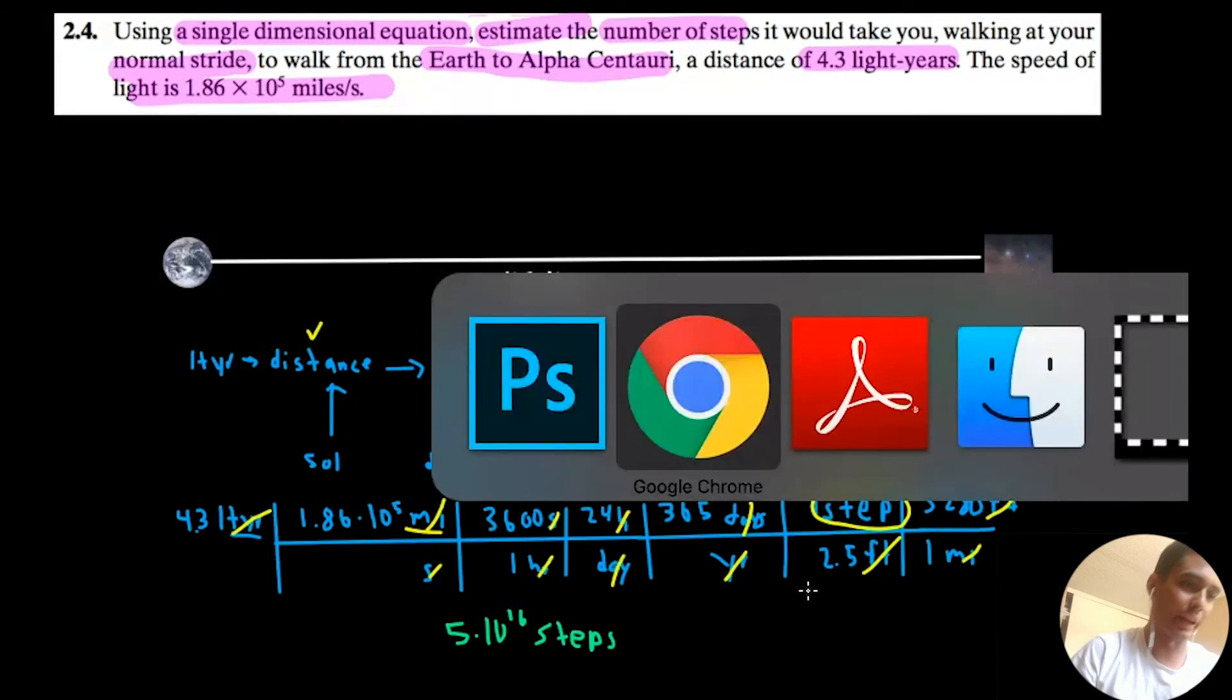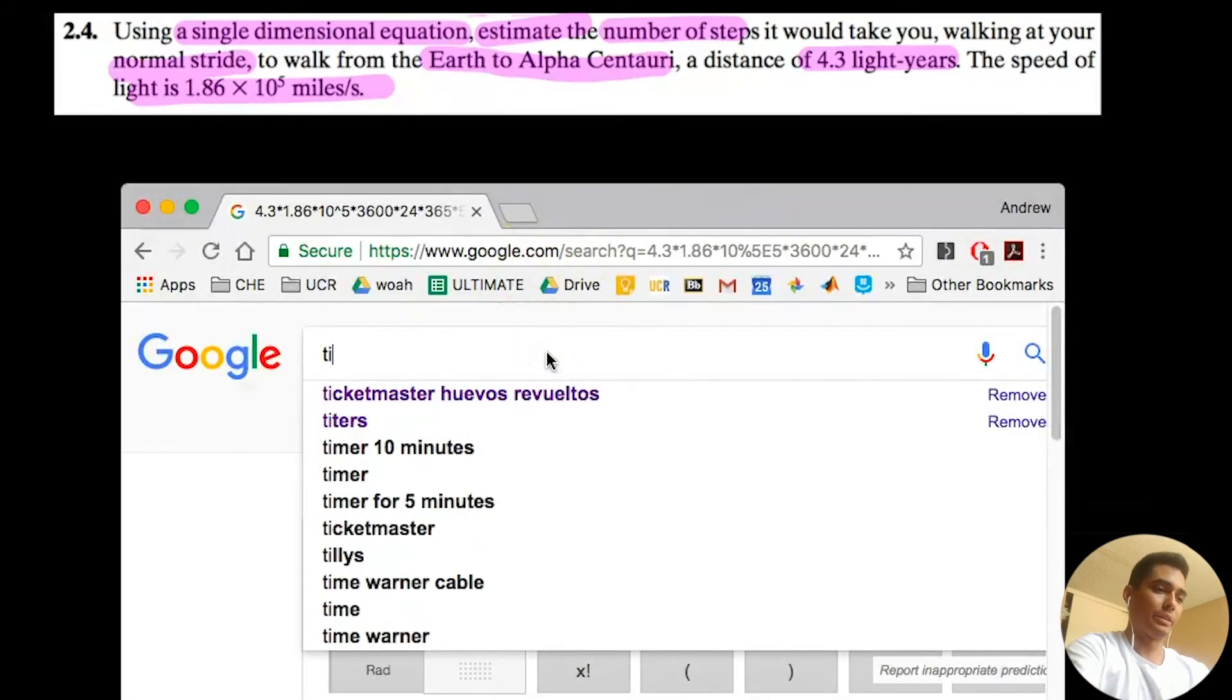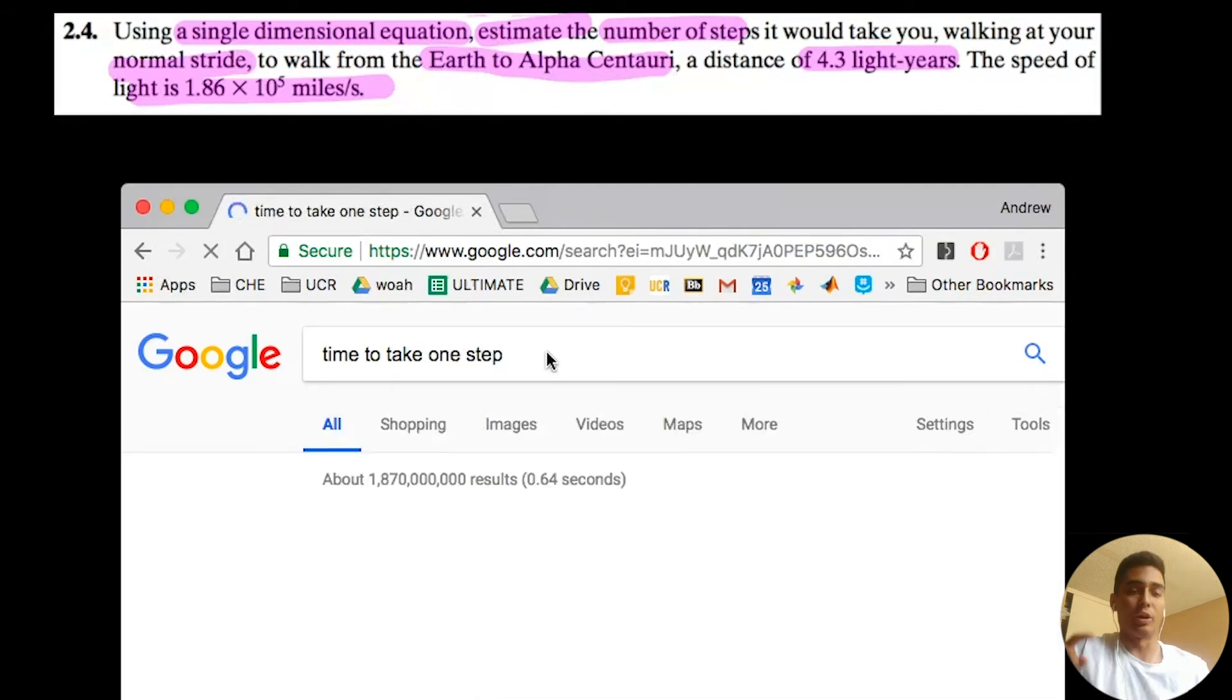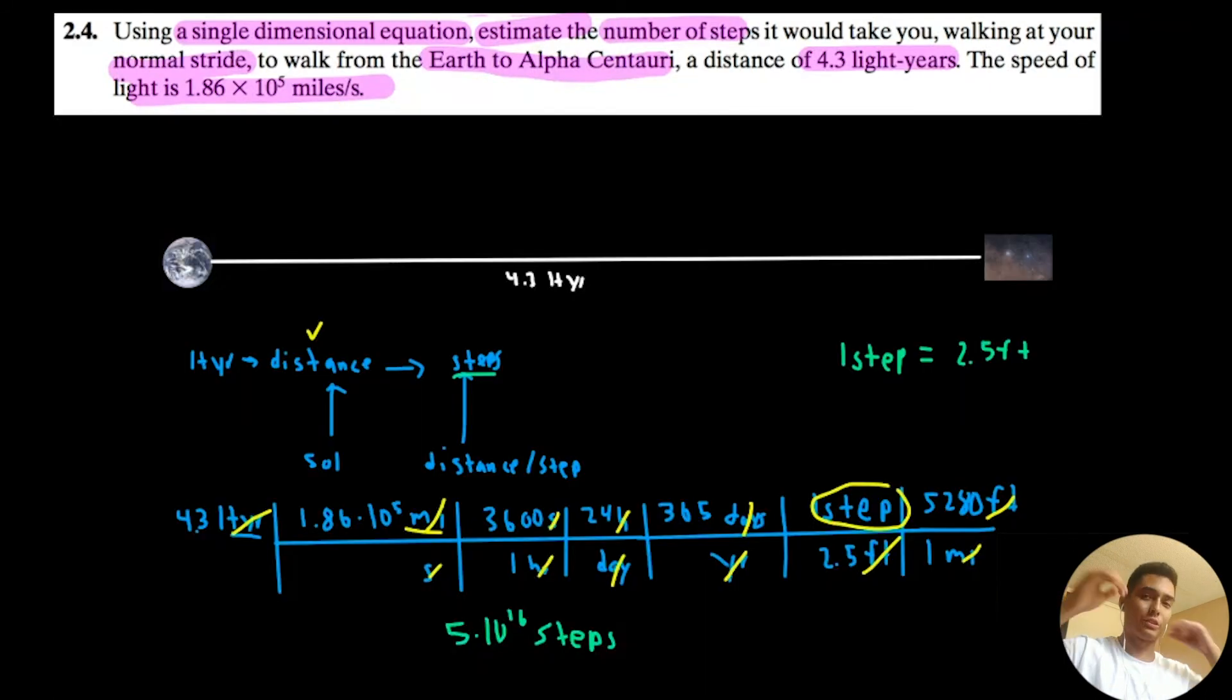5 times 10 to the 16 steps. Just for laughs, let's look up the time it takes to take one step. Time to take one step. We're taking it one step further! Okay, there's no information on that. Let's just do a little experiment real quick. So, one step per second. That's about one step per second. So, that means it's also going to be the same number of seconds. Let's convert this to years now.